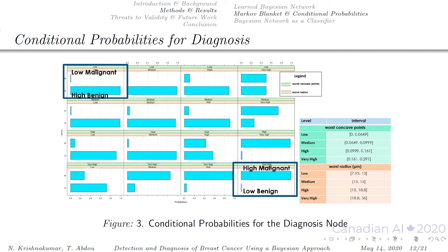Looking deeper into the diagnosis node, we get conditional probabilities for our diagnosis node. This bar chart shows the diagnosis node is conditionally dependent on two features: worst concave points and worst radius, which are its parents. As we can see on the upper left corner, the lowest probability malignant and highest probability benign were detected by low levels for both worst concave points and worst radius. On the lower right corner, the highest probability of malignant and lowest probability benign were detected by very high levels for both worst concave points and worst radius. This answers our first research question. On the right, a table shows the feature levels and their corresponding feature measurement intervals.